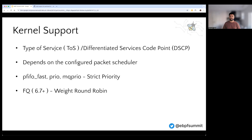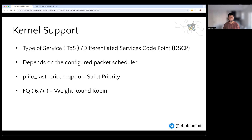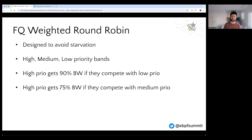The kernel has had support for some kind of quality of service for a long time now. You can either set the type of service bits on the IPv4 header, or more recently DSCP. But whether those bits are respected or not depends on the kind of packet scheduler you have configured. For example, PRIO and MQ PRIO implement something called strict priority, which can lead to starvation of processes classified as low priority. But FQ from 6.7 and above implements something called weighted round robin, and this is explicitly designed to avoid starvation. It has three priority bands: high, medium, and low.